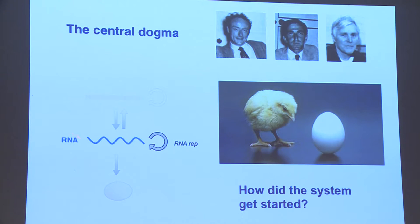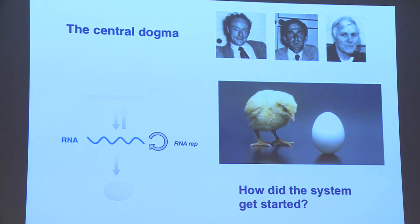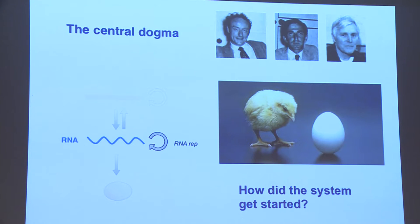Their idea was that our biology was preceded by a primordial biology that lacked both DNA and proteins, but relied on RNA as its main molecule — not just for genetics, but also for metabolism. In the meantime, a lot of compelling if circumstantial evidence has accumulated for this so-called RNA world hypothesis. The structure of the ribosome is perhaps the smoking gun. But one cornerstone of this hypothesis is missing: an RNA replicase to replicate those nascent RNA genomes.